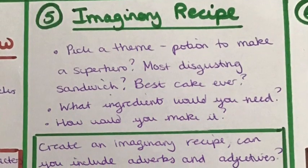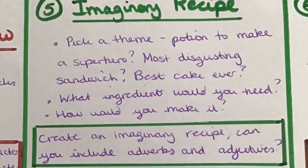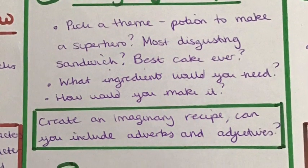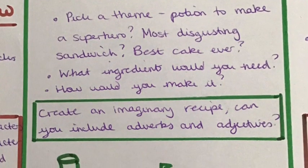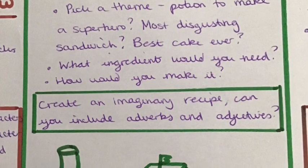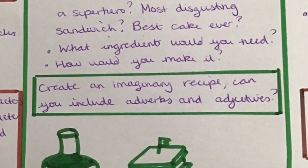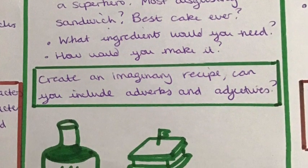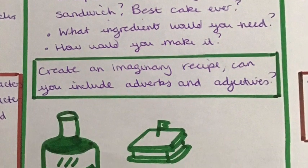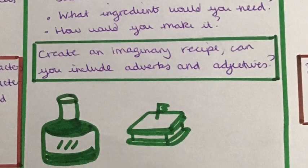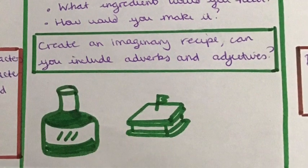Challenge five is to write an imaginary recipe. Pick a theme such as a potion to make a superhero or the most disgusting sandwich ever. What ingredients would you need? How would you make it? Write some instructions to explain.